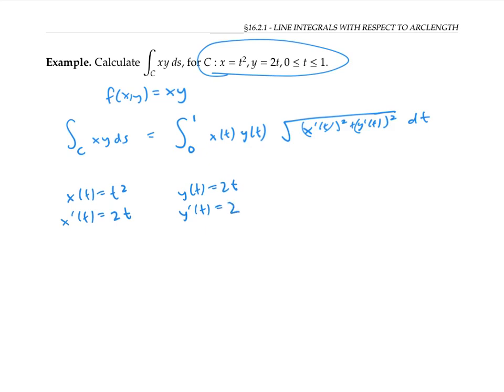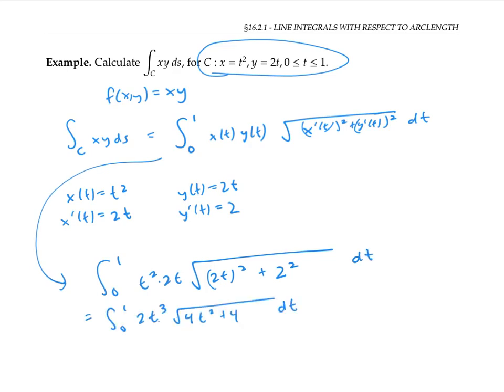Plugging all that into this, we get the integral of t squared times 2t times the square root of 2t quantity squared plus 2 squared dt. Let me simplify this. And I'll factor out the four and pull it out of the square root sign.